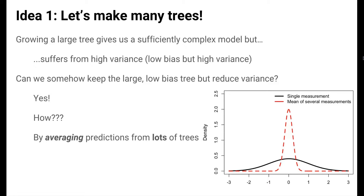This is the idea that averages of measurements are less variable than the individual measurements themselves — an idea that probably came up when you learned about the central limit theorem. The black distribution shown here is the distribution of values for a single measurement, spread from negative 3 to 3 approximately. The red distribution shows the distribution of means from many single measurements. The red distribution is a lot narrower — this is averaging reducing variability in action. Means are less variable than single measurements.